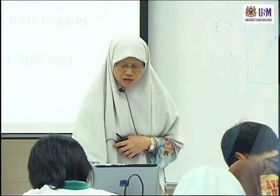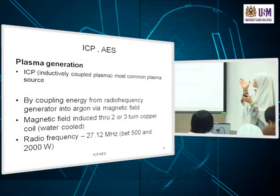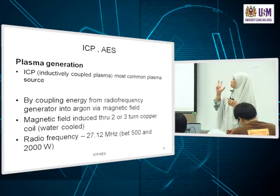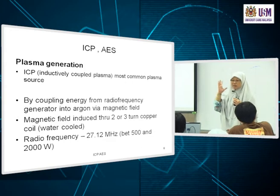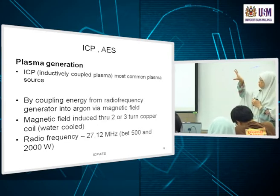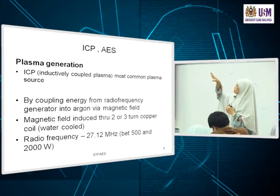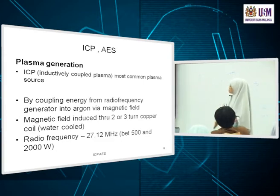Now we move on to atomic emission spectroscopy, focusing on the inductively coupled plasma, or ICP. The plasma reaches about 8,000 K, and the most commercially available atomic emission spectrometer is the ICP — inductively coupled plasma.